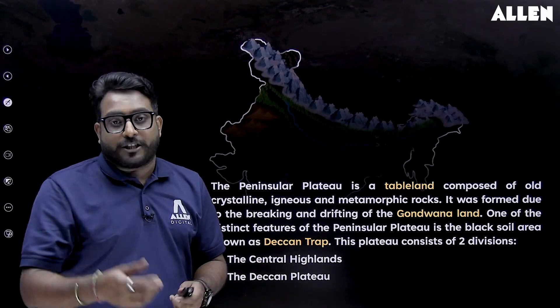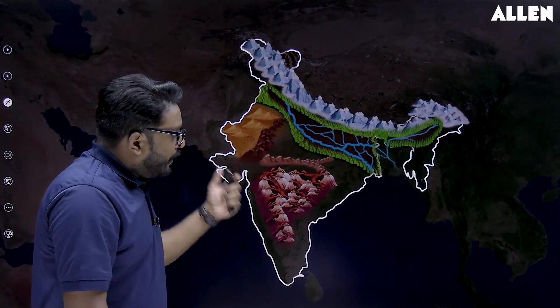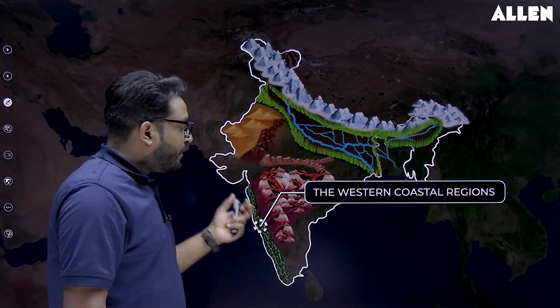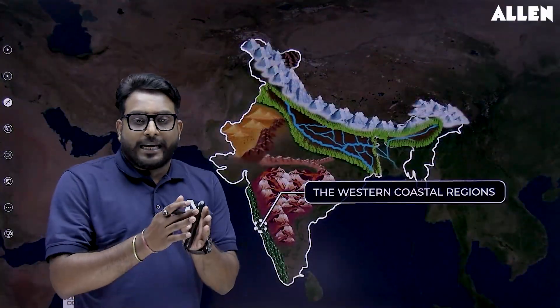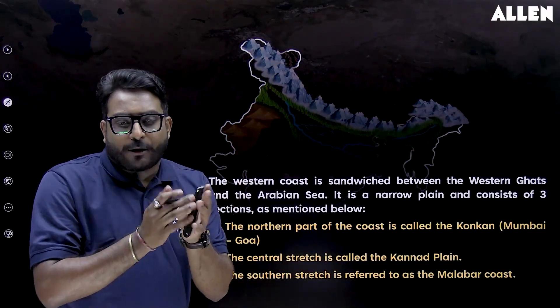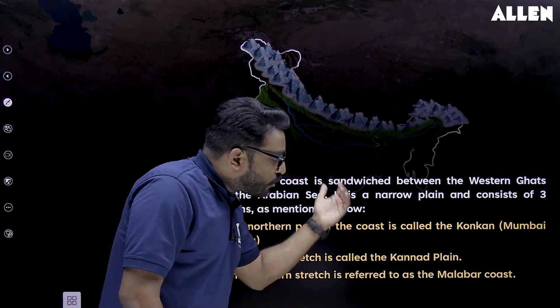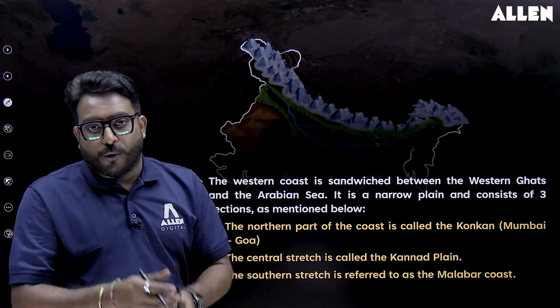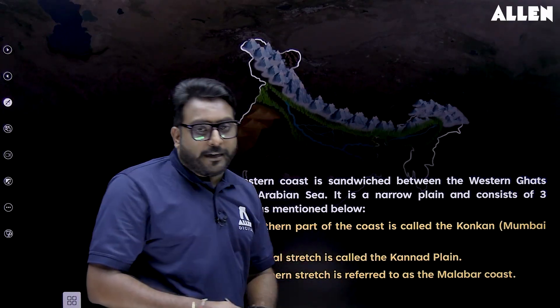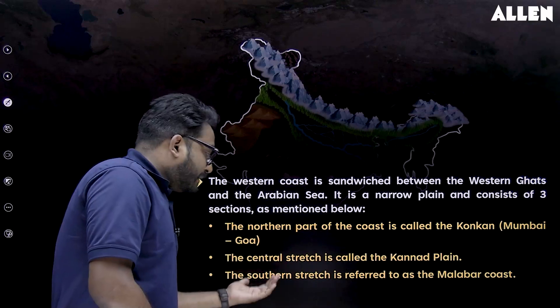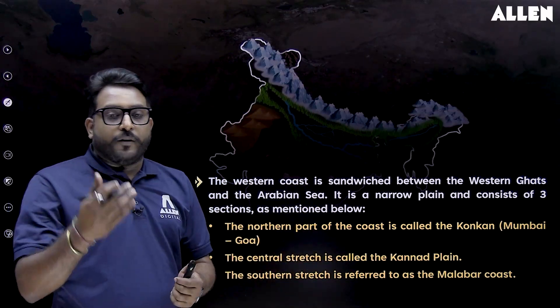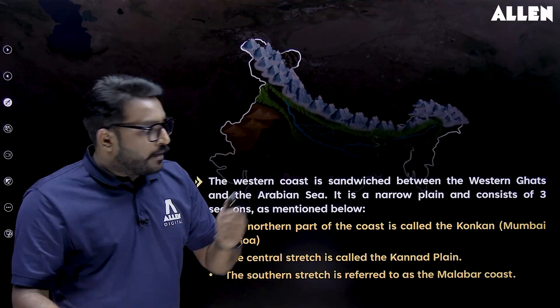The next physical feature is the Coastal Plains. The Western Coastal Plains are sandwiched between the Western Ghats and the Arabian Sea, and are quite narrow. They are divided into three parts: the northern stretch called the Konkan (Mumbai to Goa), the central stretch called the Karnataka Plains (Goa to Mangalore), and the southern stretch referred to as the Malabar Coast (between Kerala and Karnataka).